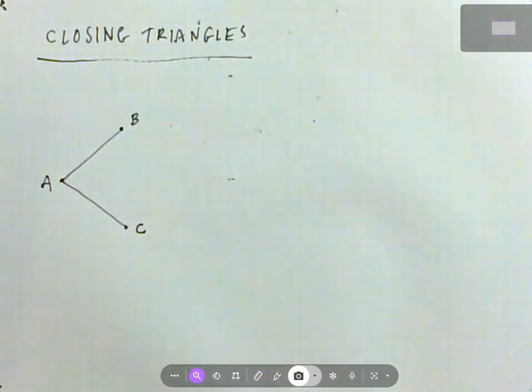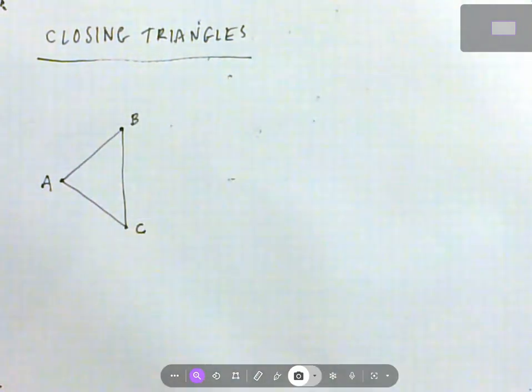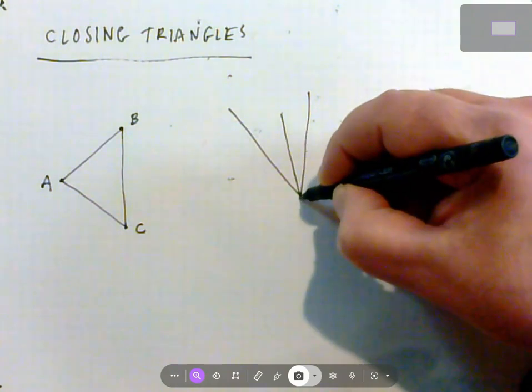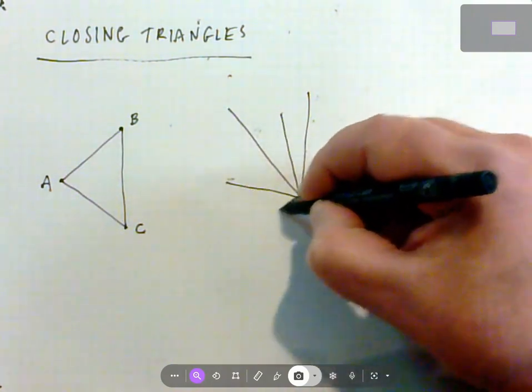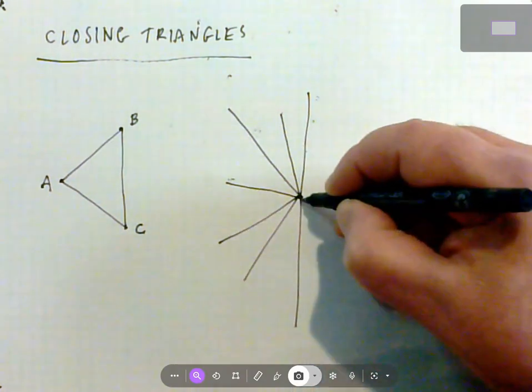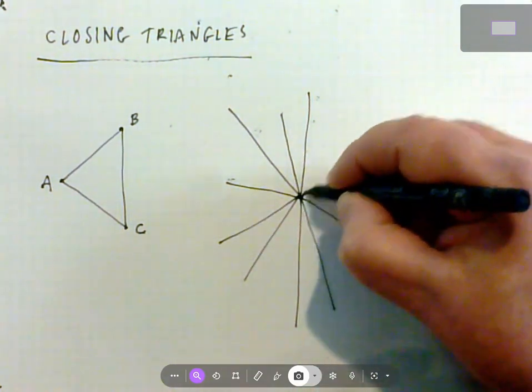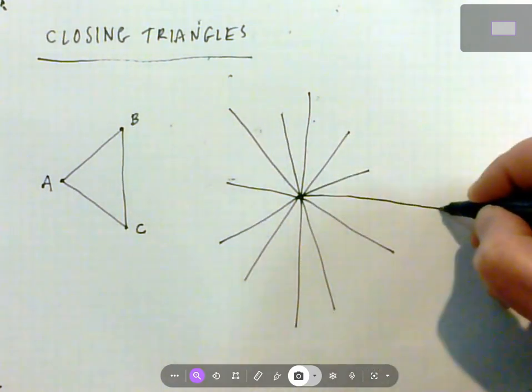When I introduce them to each other, I close a triangle. Think about it as, let's say, you have a gathering. You're inviting a bunch of people together and you know all of them but they don't know each other. This is pretty common.